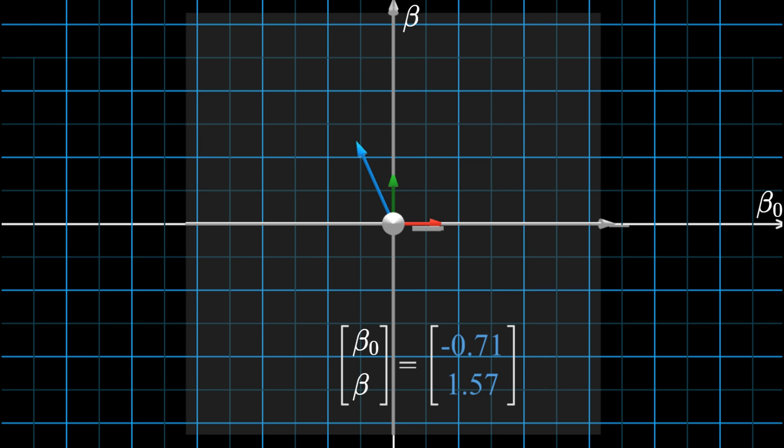Looking back at our graph of over-determined equations back in the last video, it does make intuitive sense that this vector gives us the closest solution we want.